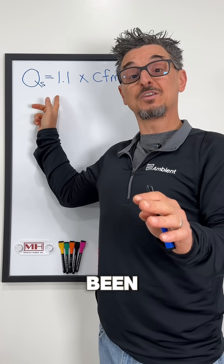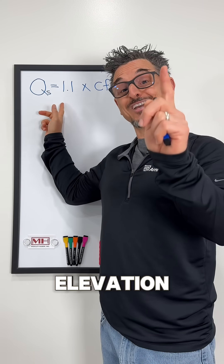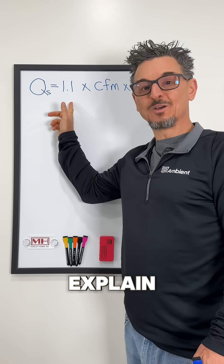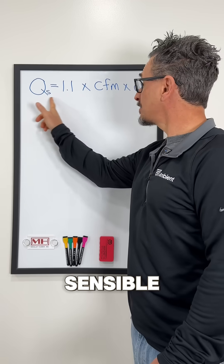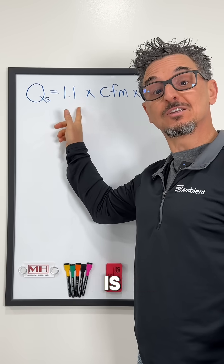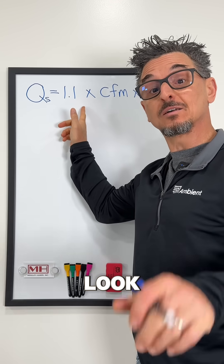That 1.1 you've been using in the sensible heat equation — it shrinks at elevation. Let me explain.